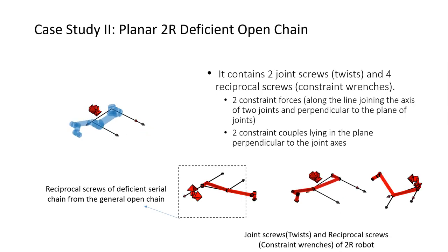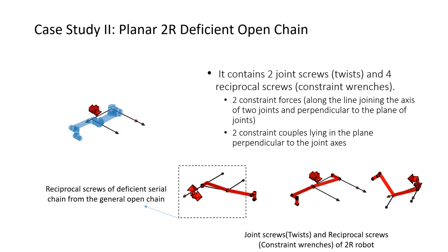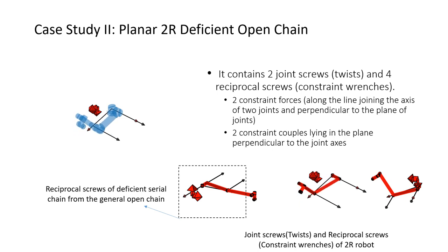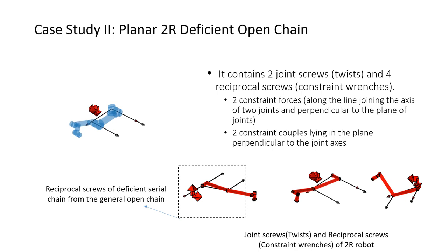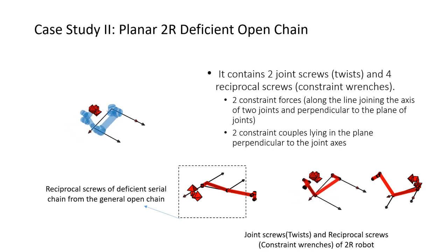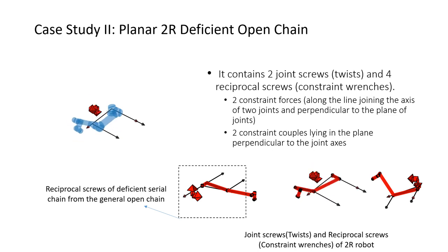The planar 2R chain can be analyzed by segmenting the universal robot chain for the ease of visualization. It is a special tool system comprising a pencil of parallel equal-pitch screws lying on a plane. It consists of two joint screws and using the recursive partition and augmentation approach, four reciprocal screws were determined. The reciprocal screws or constrained wrenches are two constrained forces — one along the line joining the axis of two joints and other perpendicular to the plane of joints. The other two reciprocal screws are two constrained couples lying in the plane perpendicular to the joint axis.